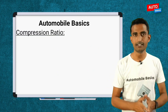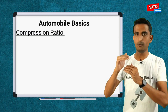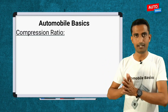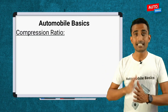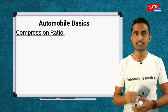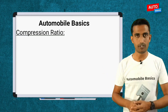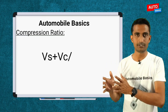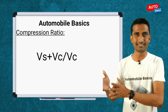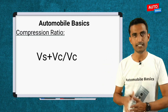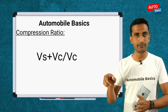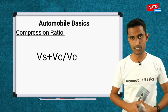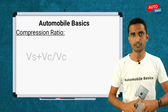So this volume ratio is the compression ratio. Swept volume is Vs and clearance volume is Vc. The formula is: Vs plus Vc divided by Vc. That is the compression ratio.